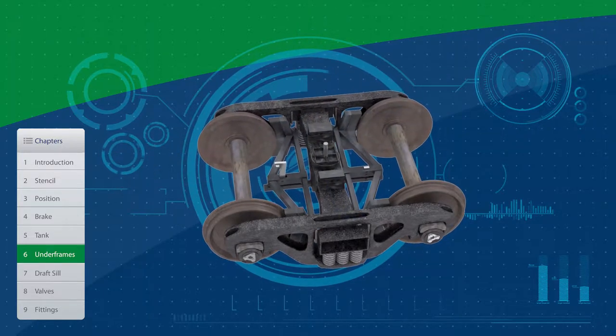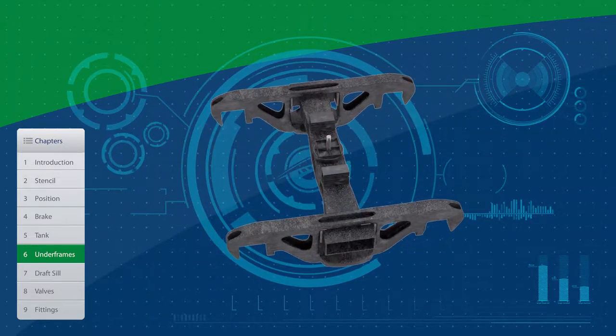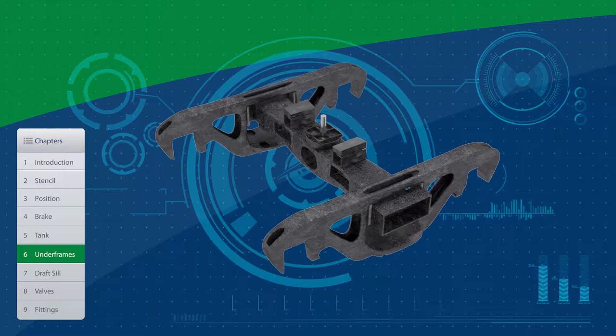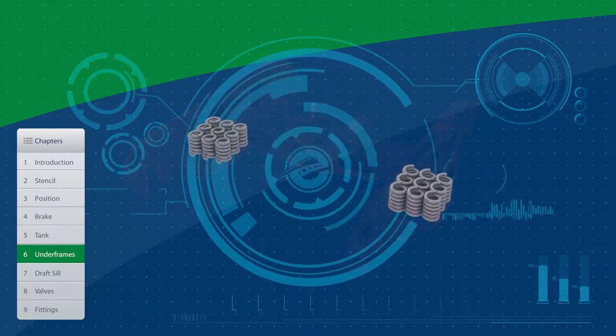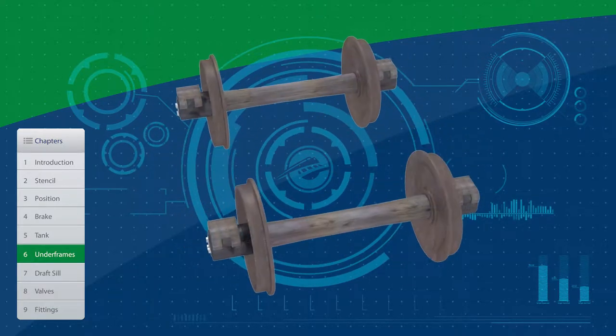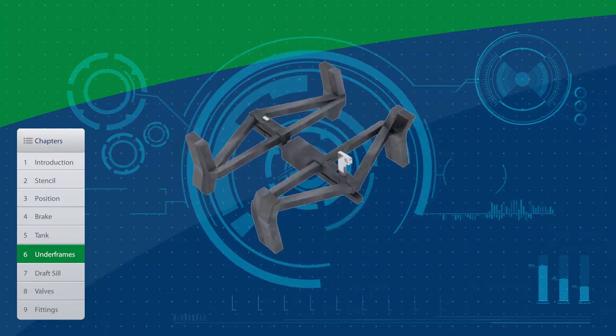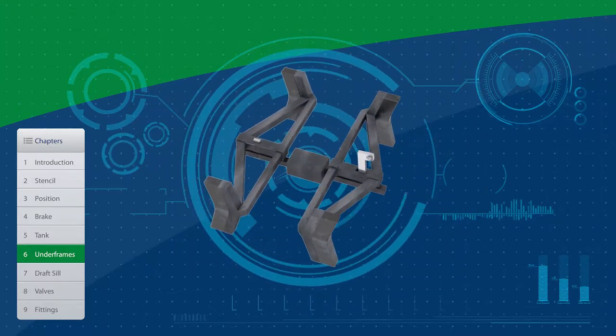The bolsters attach to the truck assembly. Truck assemblies are made of the side frames and the bolster that connects them. Side-frame springs, axles and wheel assemblies, and brake assemblies round out the major components on the trucks.